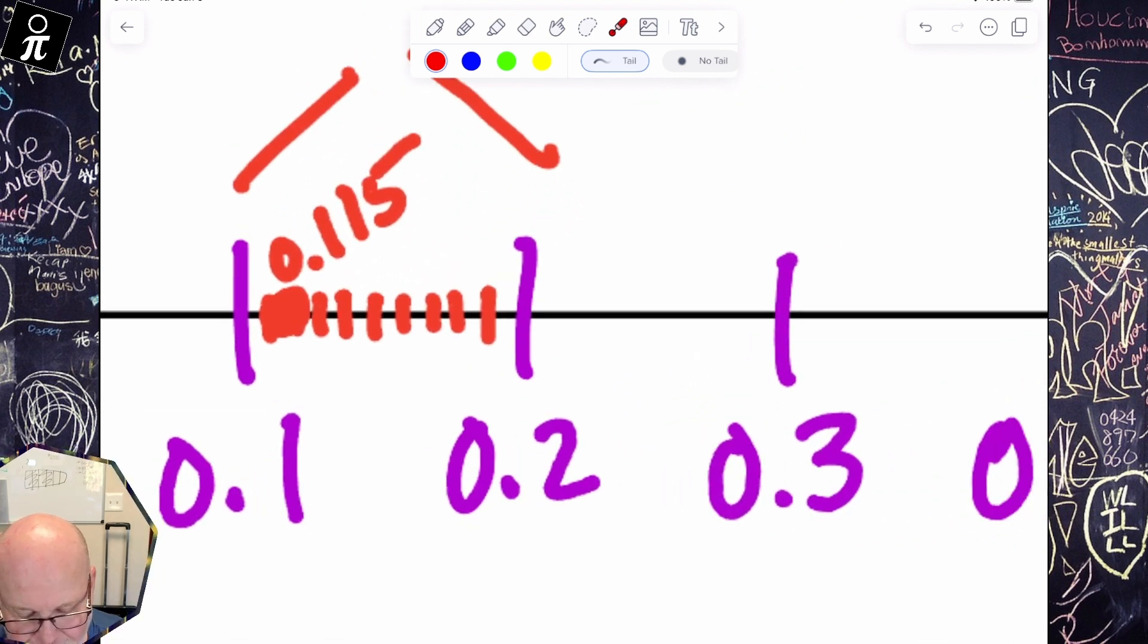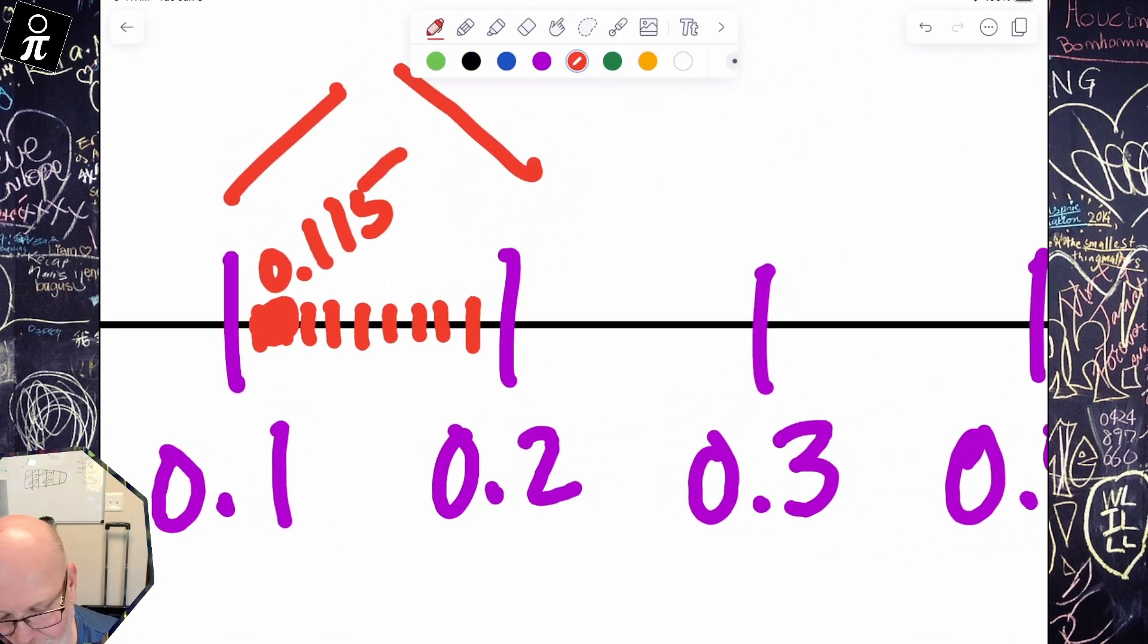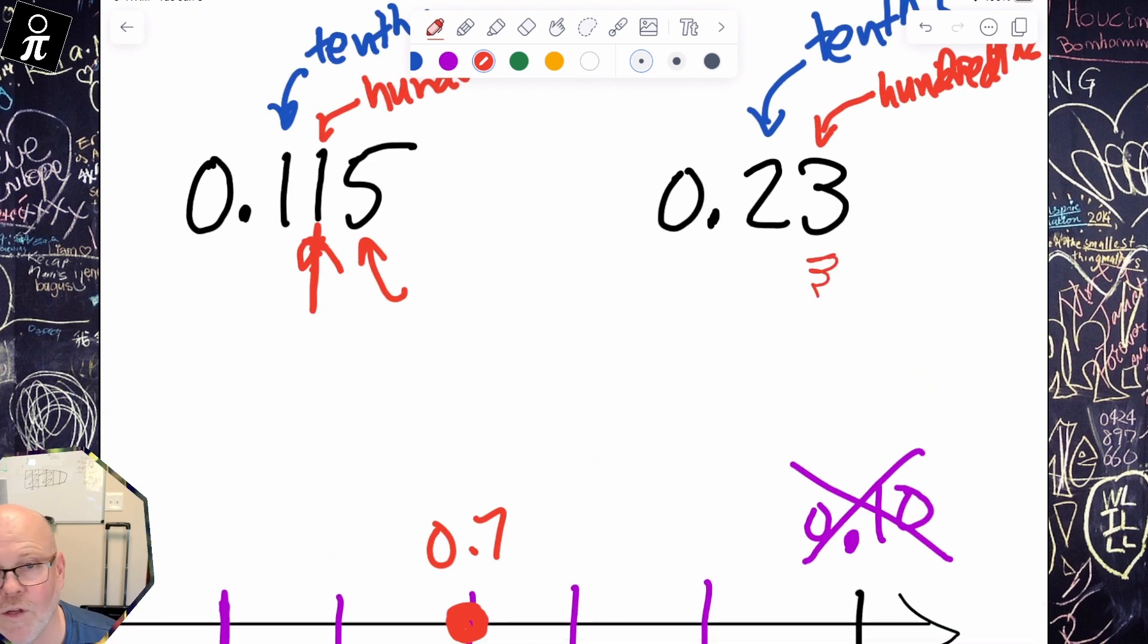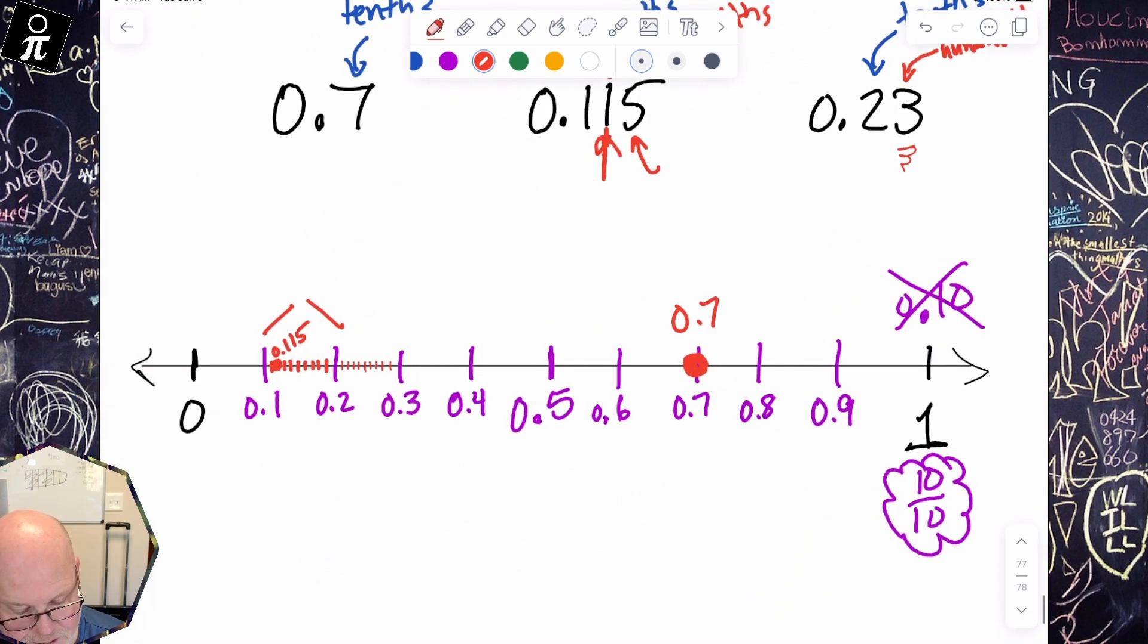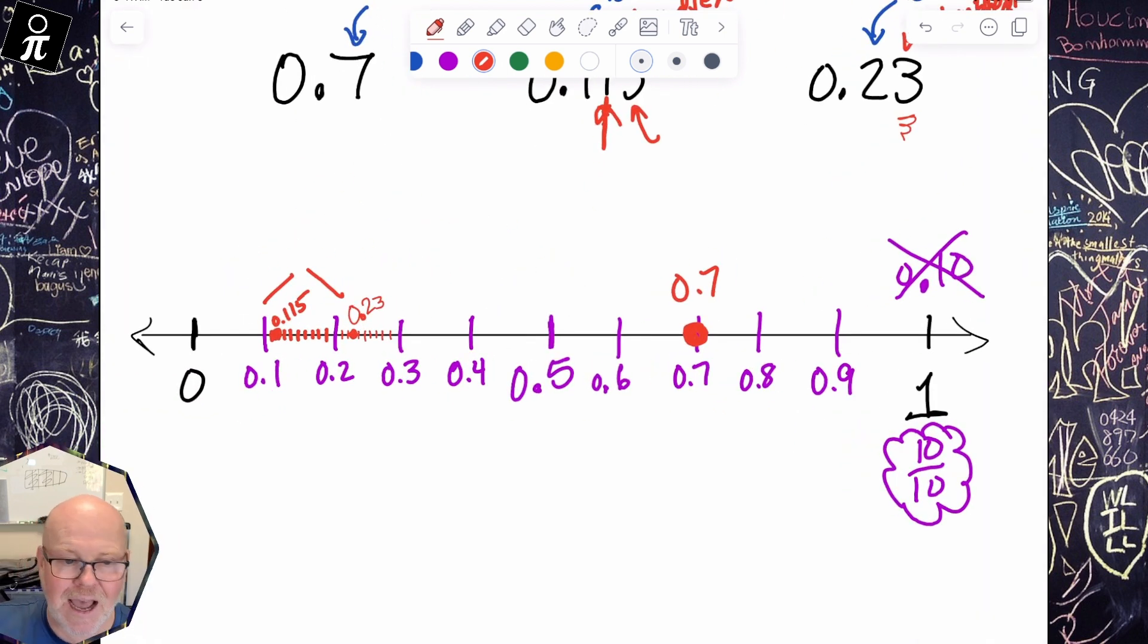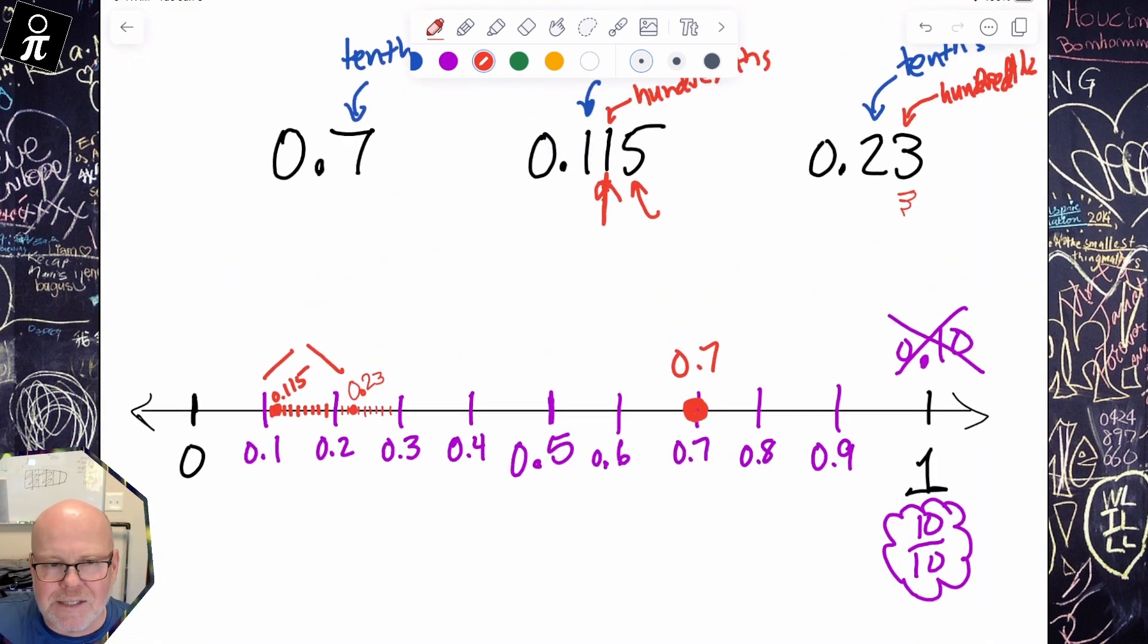So I'm going to zoom in and this time I'm going to see if I can make my pen a little bit thinner. And I know I need to cut this into 10 equal sized pieces and then move over three of those hundredths. And then so that's one, two, three, right here is 0.23.